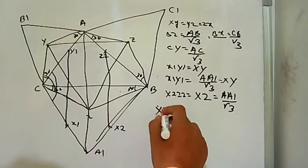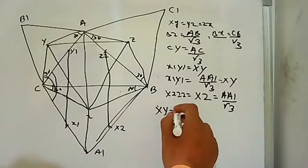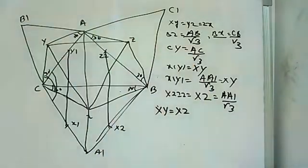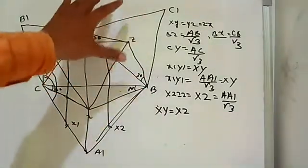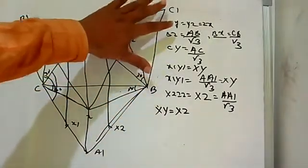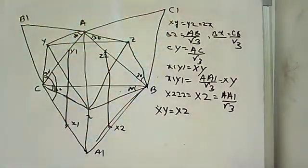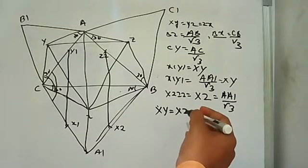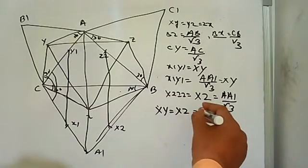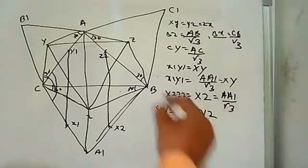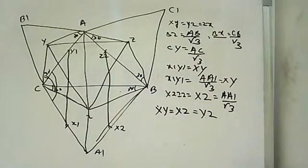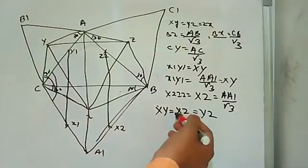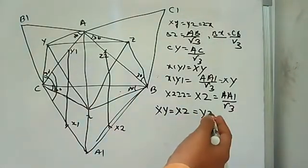So XY is equal to XZ. By the same process, applying on the other side, we can find that XZ is equal to YZ. So this proves XY equal to XZ equal to YZ, which means XYZ is an equilateral triangle.